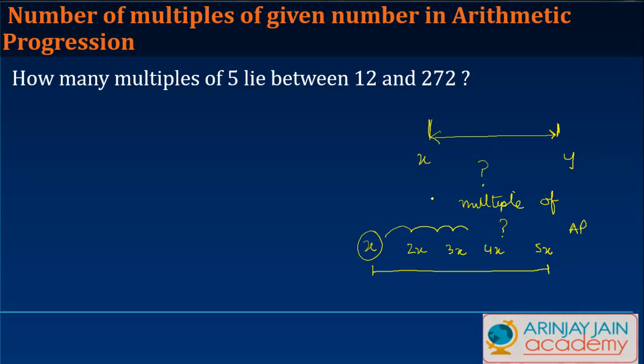In this case, what you need to find out is the first term which is going to lie between these two numbers, and the last term which is going to lie between these two numbers. If you can find out these two things, then finding out the number of terms is not difficult.